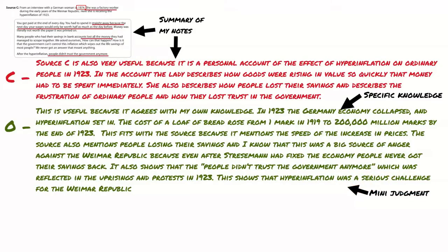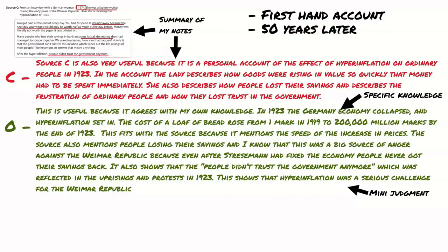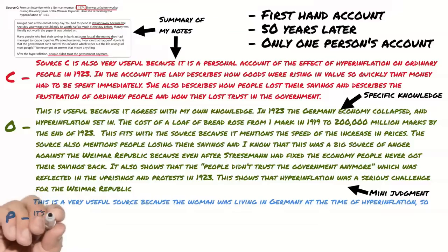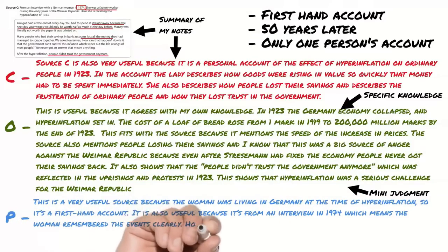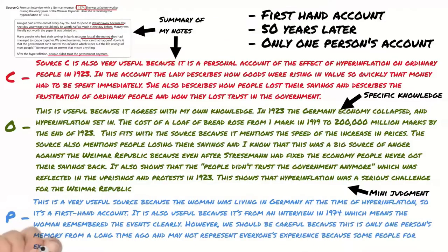Finally we come to the provenance again. This time it's from an interview with someone who was there at the time so that's really useful to us because it's a first hand account. But the woman was interviewed 50 years later so we need to take this into account. She may remember the events differently over time. Additionally we need to remember that this is just one person's account. We know that different people experienced hyperinflation in different ways. So I'm going to include that in my assessment of the source. I have written. This is a very useful source because the woman was living in Germany at the time of hyperinflation so it's a first hand account. It's also useful because it's from an interview in 1974 which means the woman remembered the events clearly. However we should be careful because this is only one person's memory from a long time ago and may not represent everyone's experience because some people, for example farmers, profited from the high food prices. You can see here that I've given some positives to the source and I've also backed up my negative with a short piece of own knowledge.